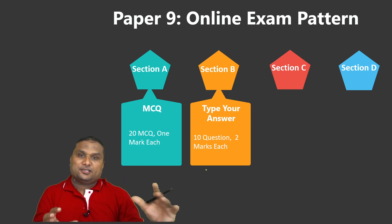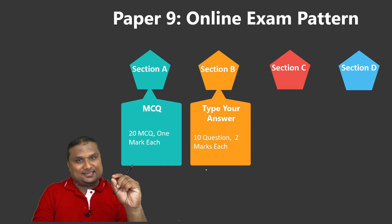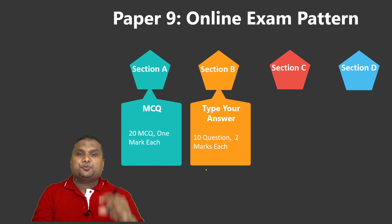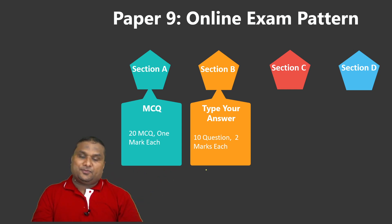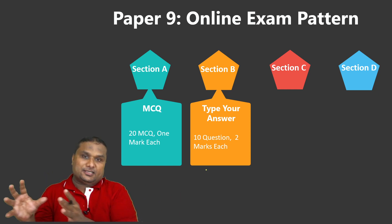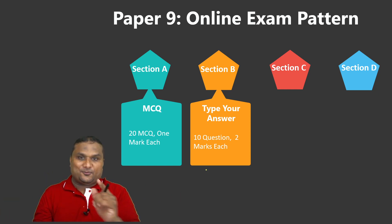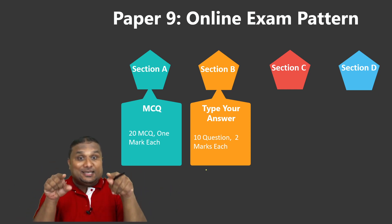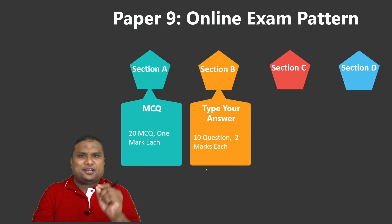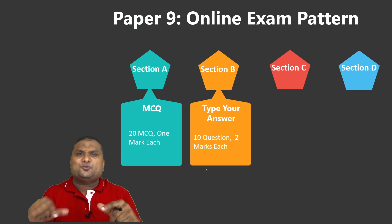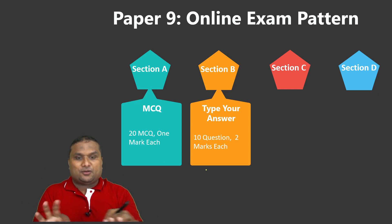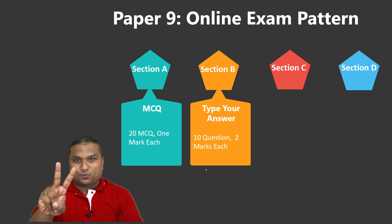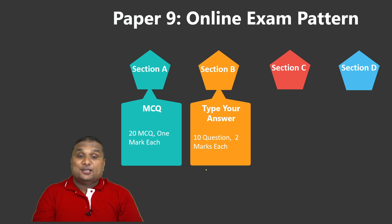For example, a question like 'Agile manufacturing is also known as blank' — in Section A as an MCQ, the right answer 'flexibility' is worth one mark. The same question in Section B, where you type 'flexibility' without options, earns you two marks. So the same concept tested in different formats carries different marks.